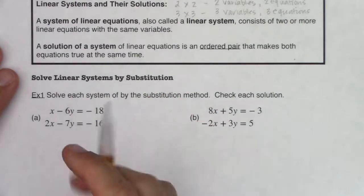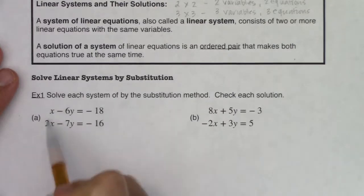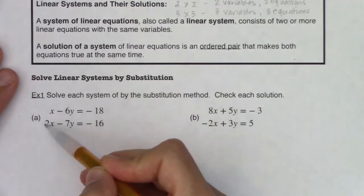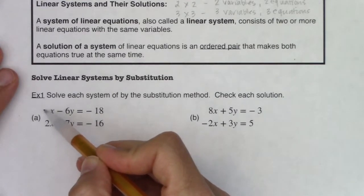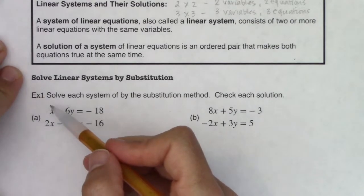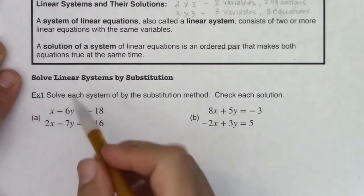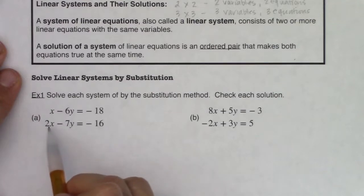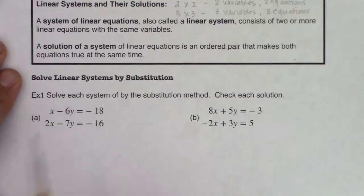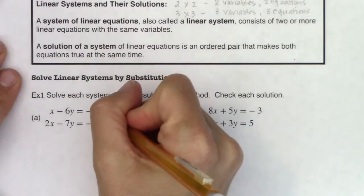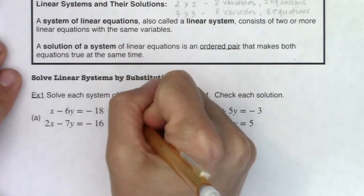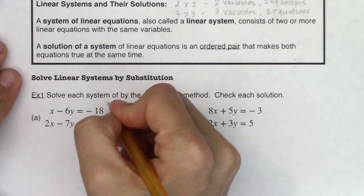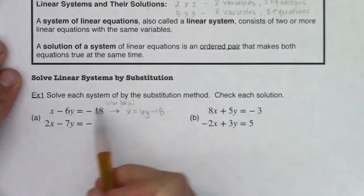I'll refer to the path of least resistance: when I look at the coefficients in front of all four variable terms, I have a one, a negative six, a two, and a negative seven. I look for the variable with the smallest coefficient — the one closest to one. Right now that's x, since there's a one in front of it. So I'll move the 6y over and get x equals 6y minus 18, solving for x by adding 6y to both sides.